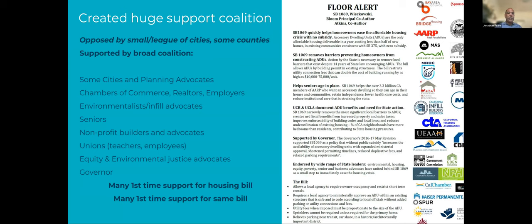Coalition building is absolutely fundamentally key — it was key from the outset, and as we continue to push the door open further, we have stirred up opposition. The strategy we use to counter that is to really seek out like-minded groups that see the importance and benefit of missing middle housing and particularly accessory dwelling units — from environmentalists to teachers to social justice advocates and legislators themselves. As you begin to lift barriers, that makes people nervous, and so you need the chorus to get bigger and bigger to counteract the voices that are going to be resistant to those changes.